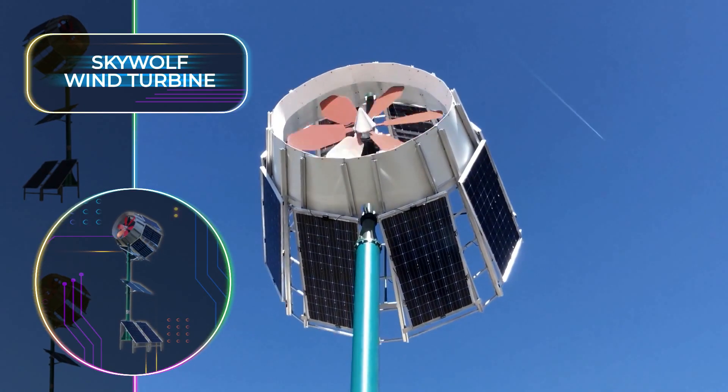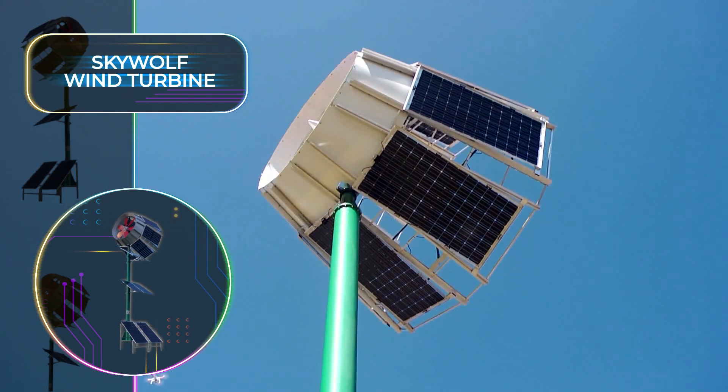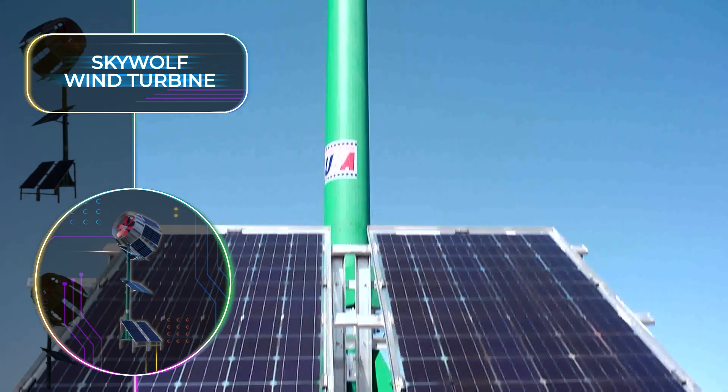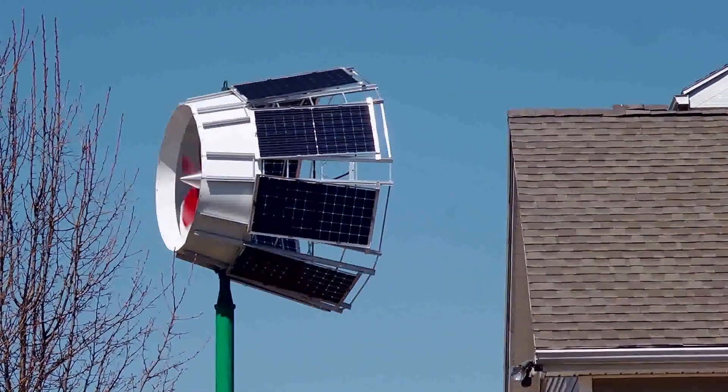At first glance, it's a wind turbine with rotating blades. Yet when you look further, you'll see what sets it apart is that it's enclosed, and also has solar panels along its surface. It means that both solar and wind energy are harnessed simultaneously.